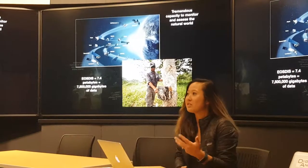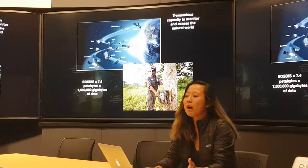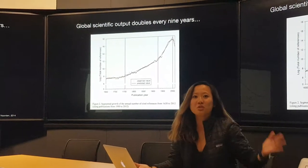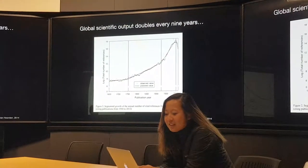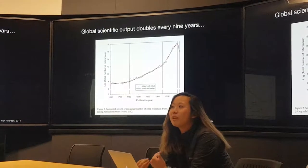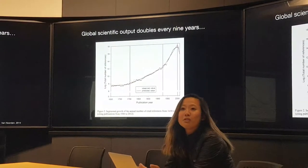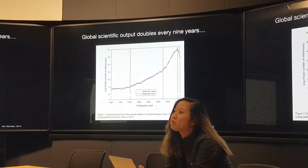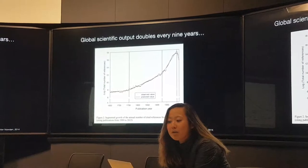We put together these giant repositories of information, which allows us to feed into the growth of scientific publications. Studies have found that the scientific output of the world is doubling every nine years. So we have thousands upon millions of scientific research points that we can draw from to gain insight on how we should be making decisions about natural ecosystems.